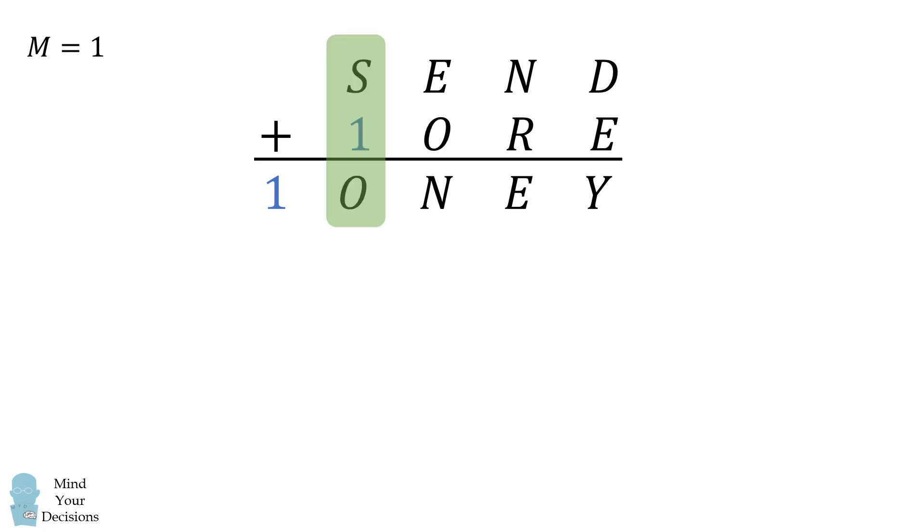Now we look at the fourth column. We again use the same sort of argument. Since the largest three digit sum we can produce is 999 plus 999, which is less than 2000, column three either gives a zero carryover, or it gives a 1 carryover to the fourth column.